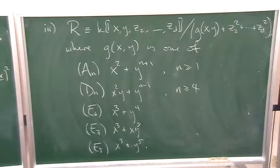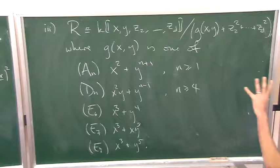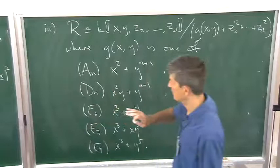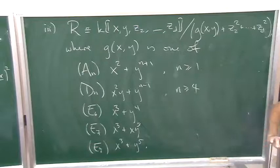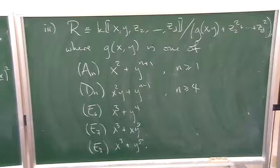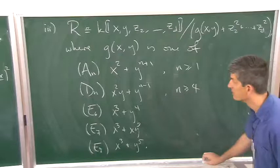And in the last couple of minutes I'll just say that part of the proof of this, the part due to Knörrer, is the fact, what sometimes gets called Knörrer's periodicity theorem, that if there weren't any Z's, each of these has finite Cohen-Macaulay type and adding the sum of these squares does not change the Cohen-Macaulay type. I think rather than rush to write that I will just quit here. Thank you for listening.